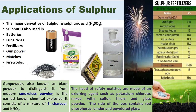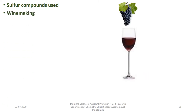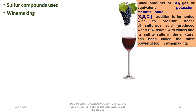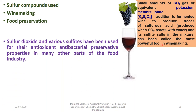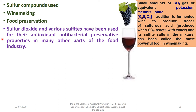Sulphur is also used in fireworks. Sulphur compounds are used in wine making: small amounts of sulphur dioxide gas or potassium metabisulphite (K₂S₂O₅) are added to fermented wine to produce traces of sulphurous acid and sulphite salts, which has been called the most powerful tool in wine making. Sulphur dioxide and various sulphites are also used in food preservation for their antioxidant and antibacterial properties.